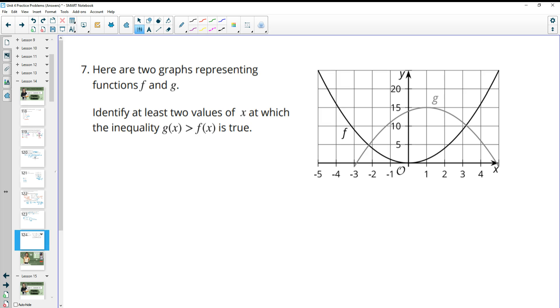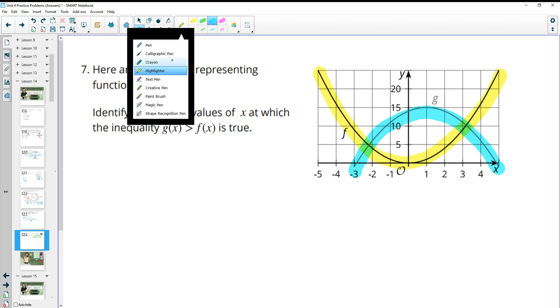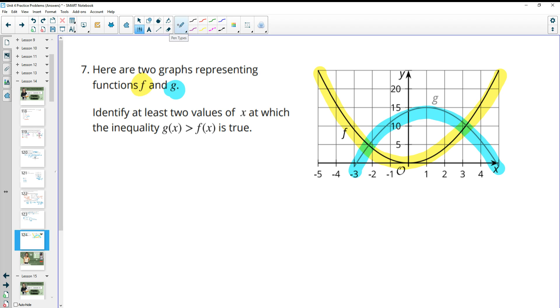Number seven. Here are two graphs representing functions F and functions G. So let me highlight these so that they stick out. So here's F and then here's G.